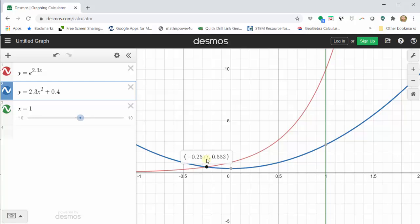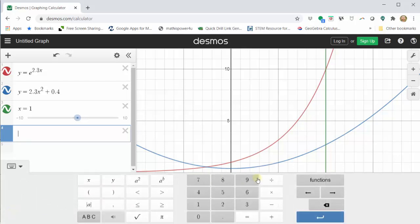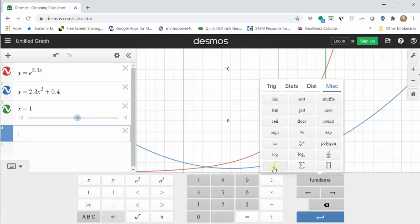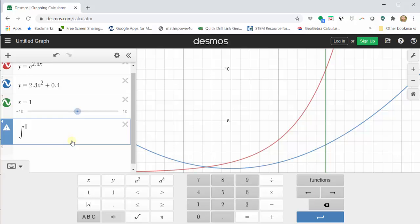And now let's evaluate the definite integral to determine the volume. To do this, click in cell four, click show keypad, click functions, then click the integral. We can also just type in int from the keyboard.